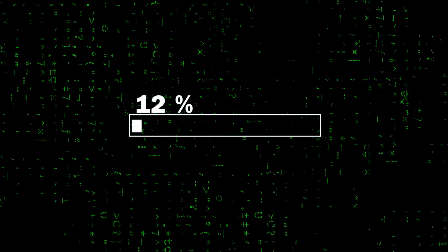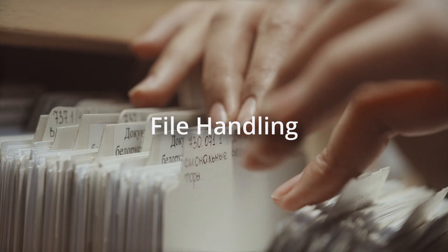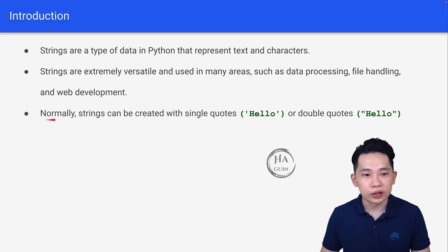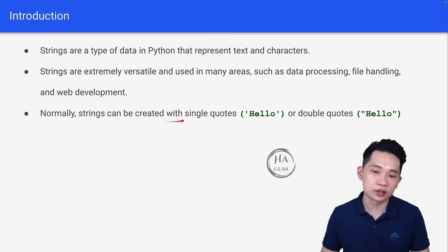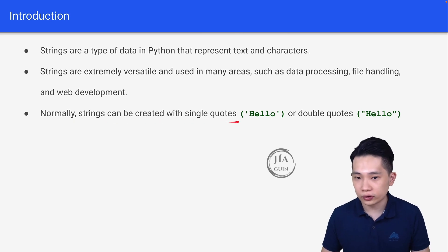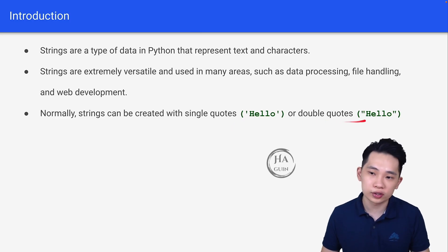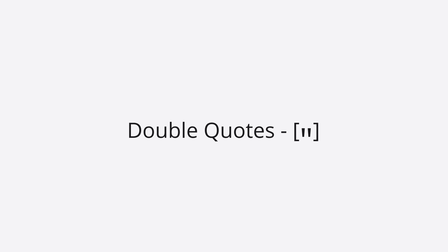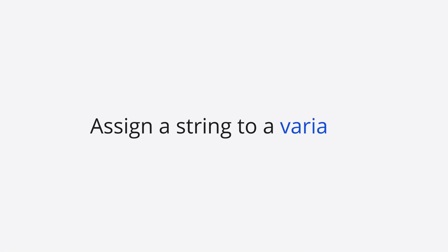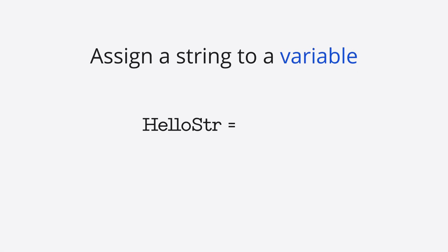Strings are used in areas such as data processing, file handling, and web development. Normally strings can be created with single quotes or double quotes. We'll just use double quotes for simplicity. You can assign a string to a variable like this: hello_string = "Hello".